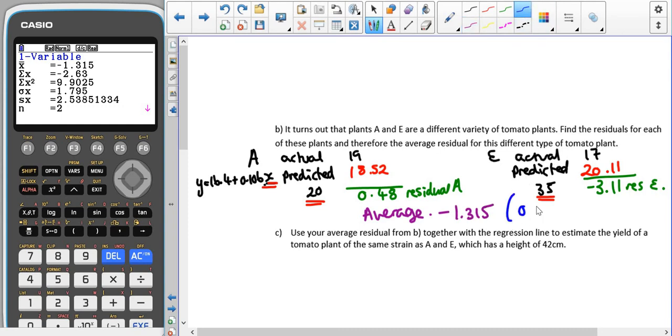That gives us an average of minus 1.315. Alternatively, you could have done 0.48 plus minus 3.11, and then done all of that divided by two because it's only two numbers, and that should give you the same value.